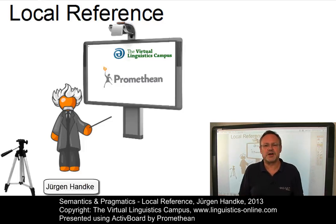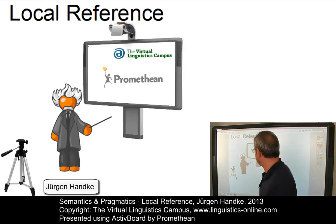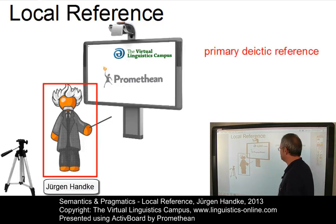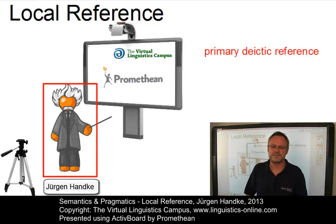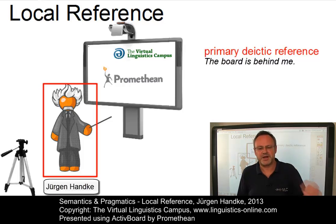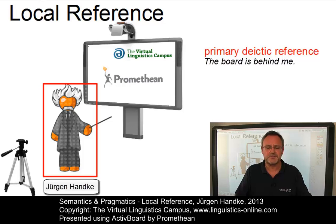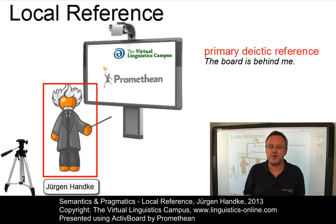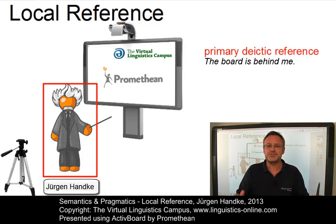The first situation I would like to mention is referred to as primary deictic reference. Here I would say 'the board is behind me.' The primary deictic definition of an object in space uses the speaker — that is me in this case — as a reference point and also as the origin of the coordinate system, and relates all other objects to the speaker's position. So I am the reference point and the origin here.